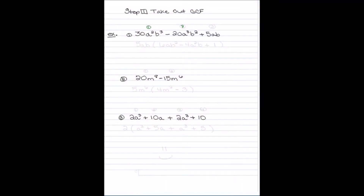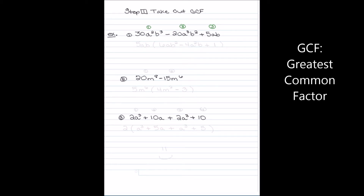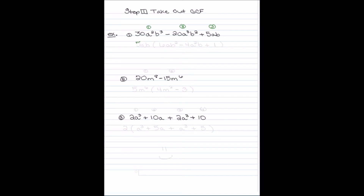On the paper I have three examples. The first example has three terms, so I'm looking for a common GCF among the numbers and the letters. Among the numbers — 30, 20, and 5 — the GCF is 5. When I look at the letters, they only have one A and one B in common, so I take out an A and a B. Inside my parentheses I write what I have left: if I took out a GCF of 5AB, inside the parentheses I'm left with 6.